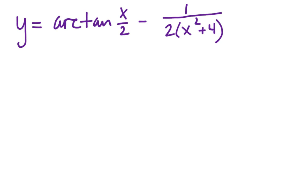So arctan of u—again, u prime. Here's my u. u prime equals 1 half over 1 plus u squared, so it's going to be x squared over 4.